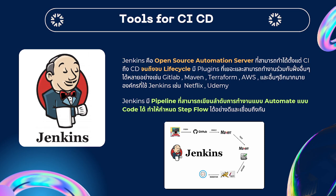The next topic is Tools for CI/CD. We use Jenkins as an open source software for CI/CD. It helps to use code to support other tools like GitLab, Maven, Terraform, and AWS, to support the work that needs to be done.